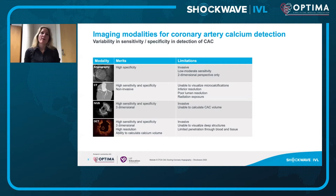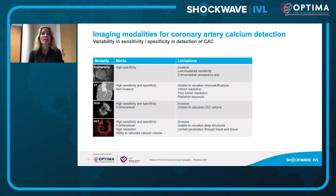Looking at the merits and limitations of different imaging modalities for detecting coronary artery calcium, there's quite a variability in sensitivity and specificity. The angio has a very high specificity close to 90%, but the sensitivity is low and we only get a two-dimensional perspective. CT has the advantage of being non-invasive with both high sensitivity and specificity, but inferior resolution makes it unable to visualize micro-calcification and less able to evaluate calcium thickness, volume, and lumen obstruction.